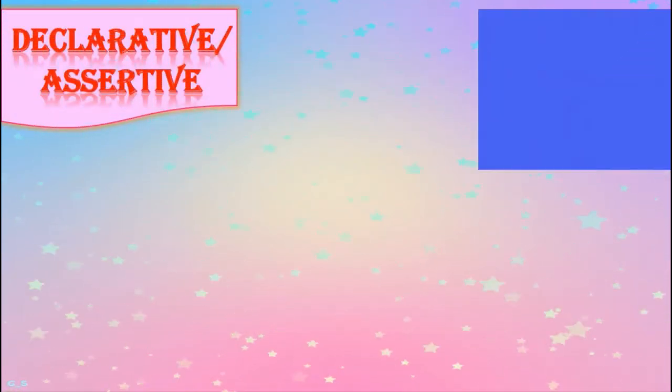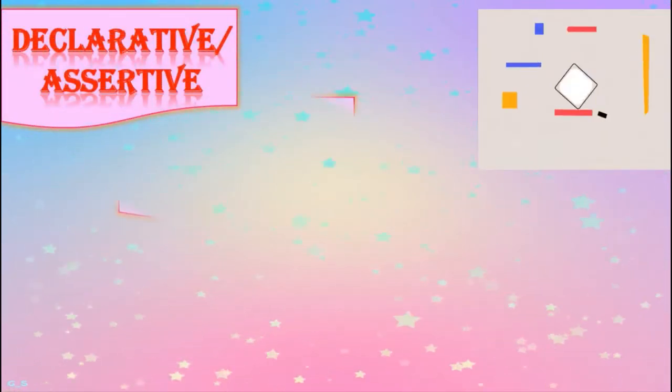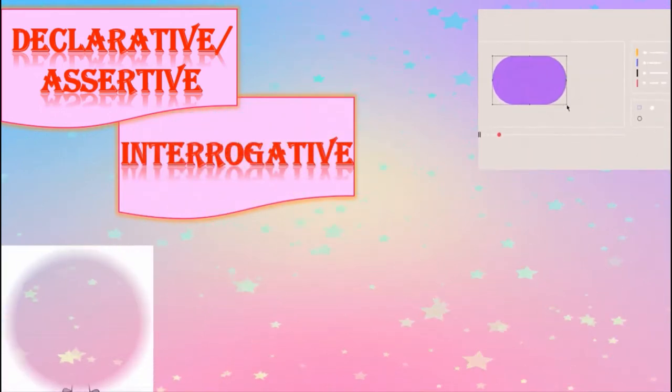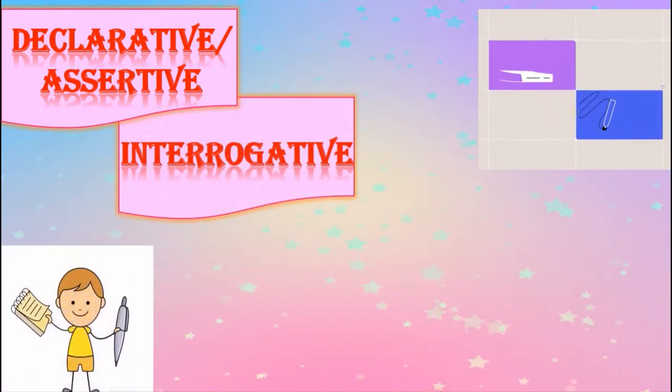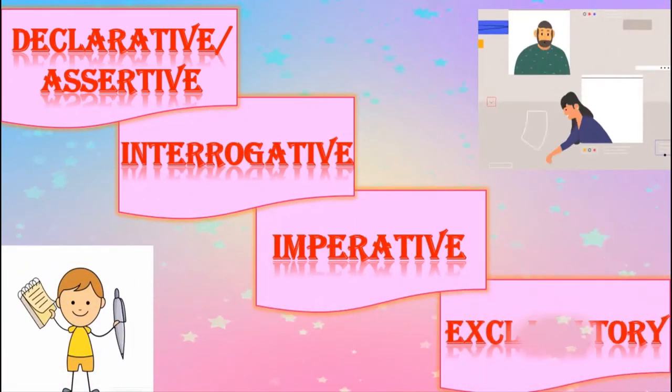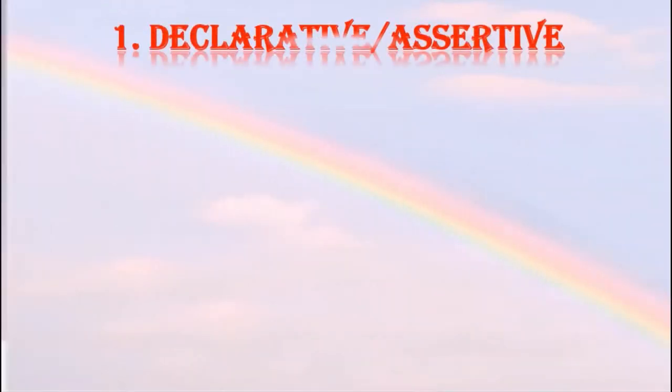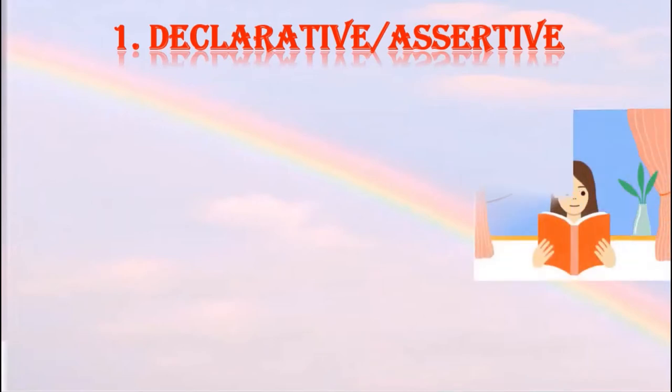But today in this class we will focus on four important types of sentences: declarative or assertive, interrogative, imperative and exclamatory. Let us look at each in detail. The first type of sentence is declarative or assertive.